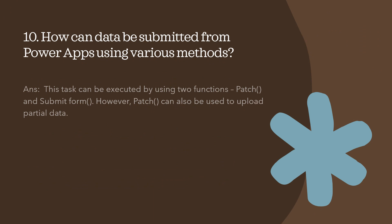The next question is: how can data be submitted from Power Apps using various methods? Data submission can be executed using two functions: the patch function and the submit form function. The patch function can also be used to upload partial data — that is, if you want to upload only partial data, you can use the patch function for that purpose.